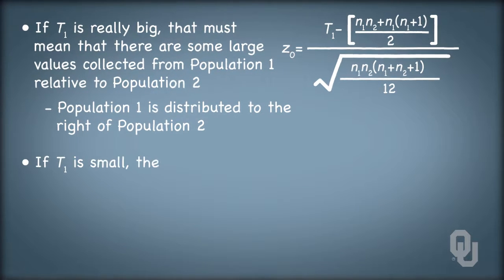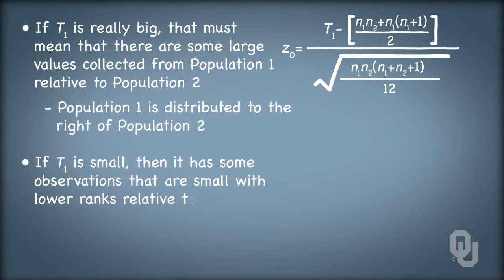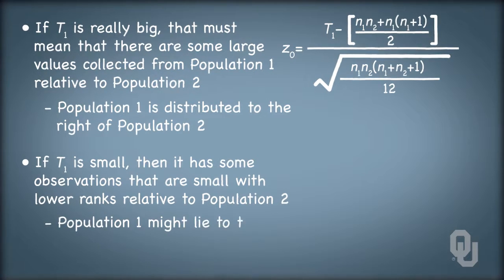Likewise, if T1 is small, then it has observations that are small with lower ranks relative to population two. And as such, population one may lie to the left of population two. We're not dealing with the magnitude of the values, only their ranks.